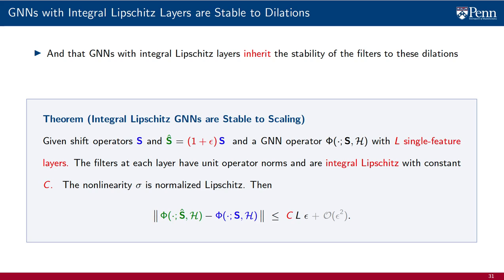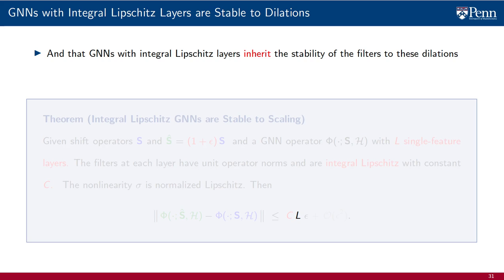If the layers of the GNN are integral Lipschitz, an almost identical bound holds. The only difference is a factor L that appears as the deformation propagates across L layers.